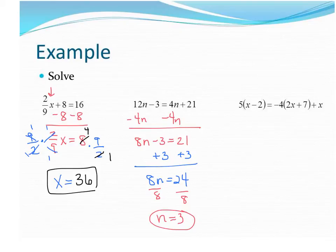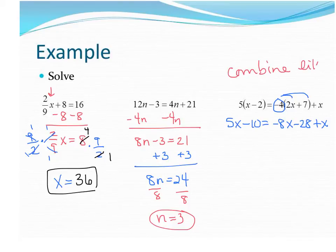Our last one here on this slide, we're going to want to distribute first. So let's do 5x minus 10 equals. Make sure you're distributing a negative 4. So we get negative 8x minus 28 plus x. Then I would suggest you always combine like terms. Here, I'm going to write it out. It's that important. Combine like terms. Always, always.